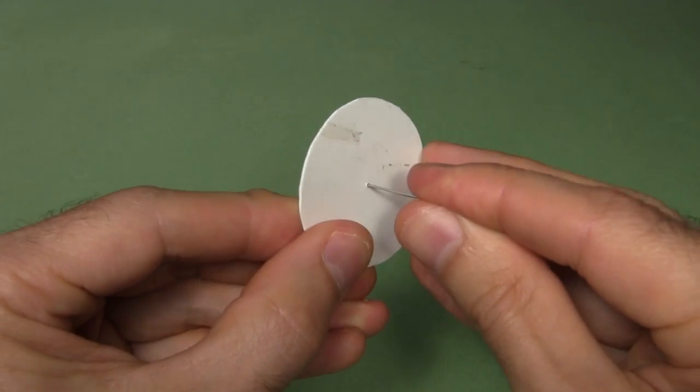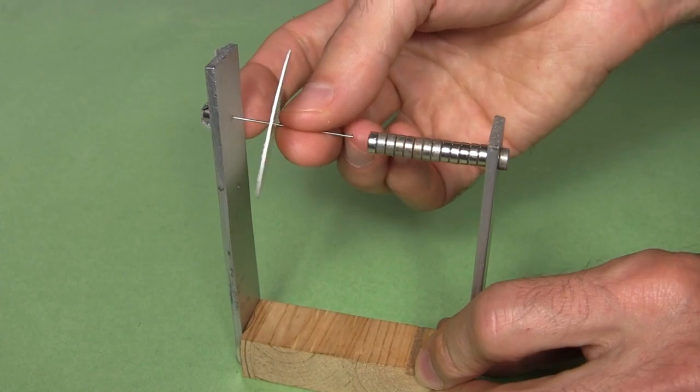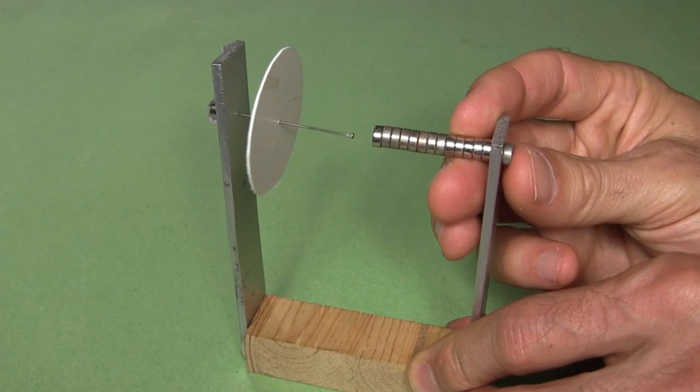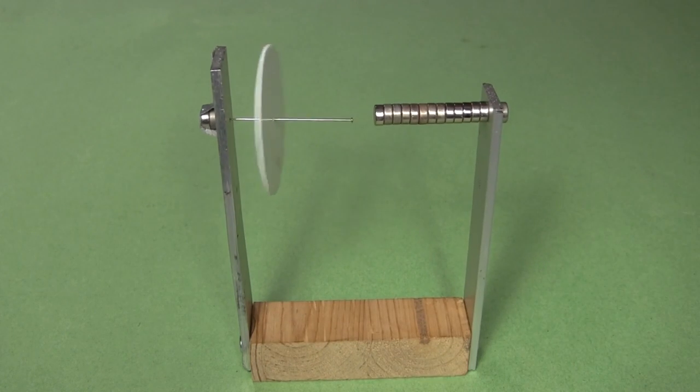For the rotor, I've cut this round plastic disc and stick a needle through it. By putting the sharp end of the needle in the tiny indentation, and with the help of the magnetic fields, the needle just sits there. It turns very easily.